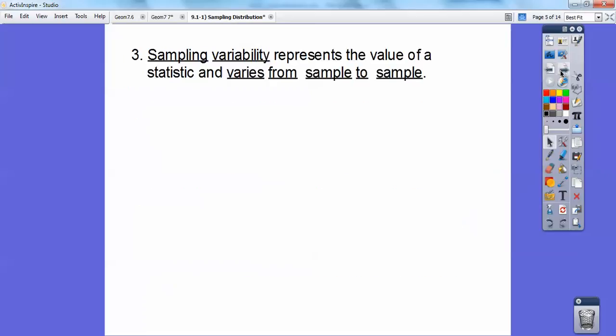So we use stats to estimate parameters. Sampling variability represents the value of statistics and it varies from sample to sample. One sample will give you a different yield than another sample.